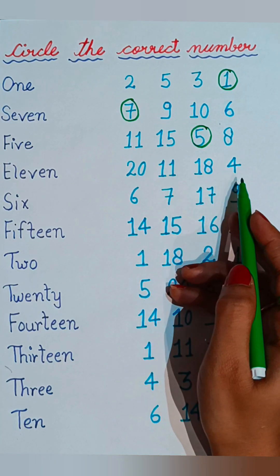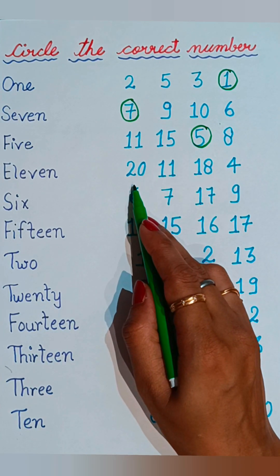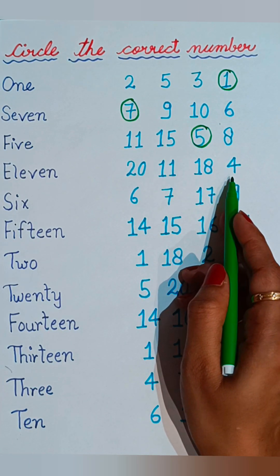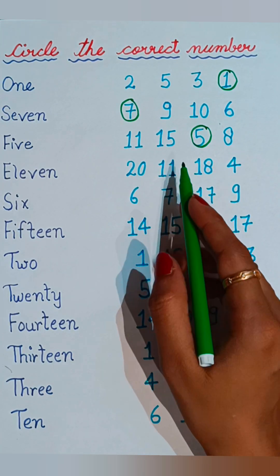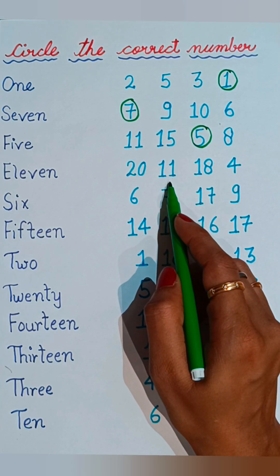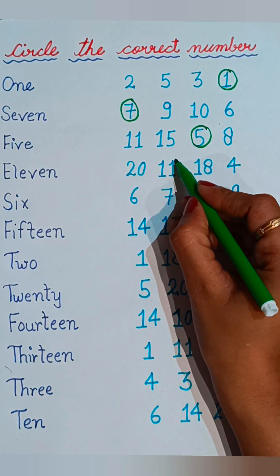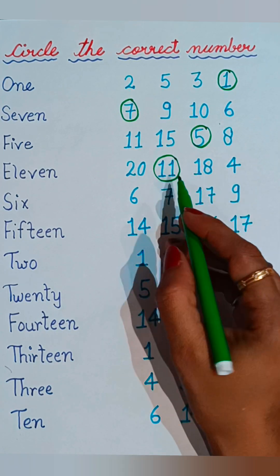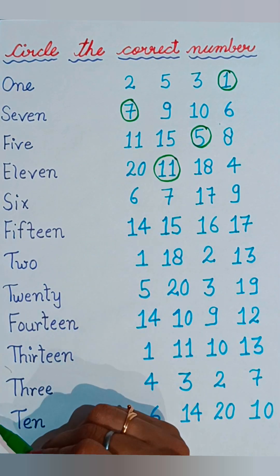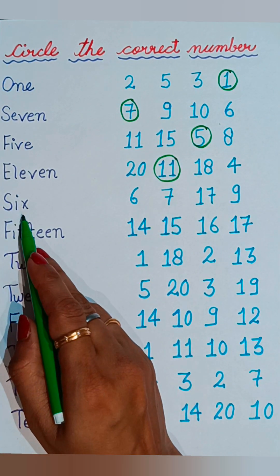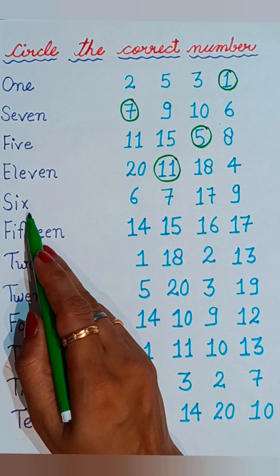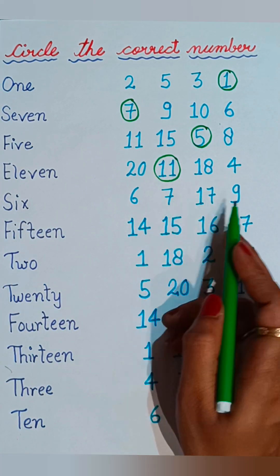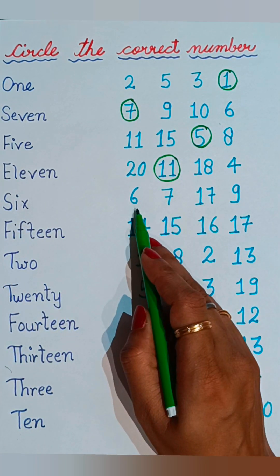Now see the next one: E-L-E-V-E-N, eleven. Now tell me where eleven is given. Seven, twenty, eleven, eighteen, and four — eleven is given here at the second number, so we will circle the correct number eleven.